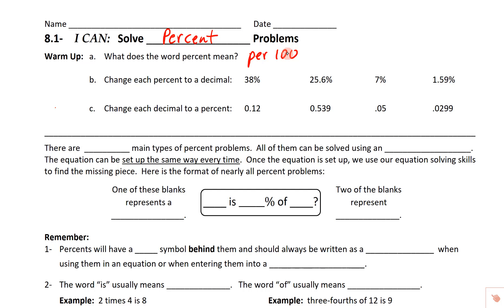In the second part of the warm-up, it says to change each percent to a decimal. Percents have the percent sign at the very end of them, but we can have a decimal equivalent for them. Every number has a decimal on it — so 38% is 38.0. To change from a percent to a decimal, we move the decimal two places.